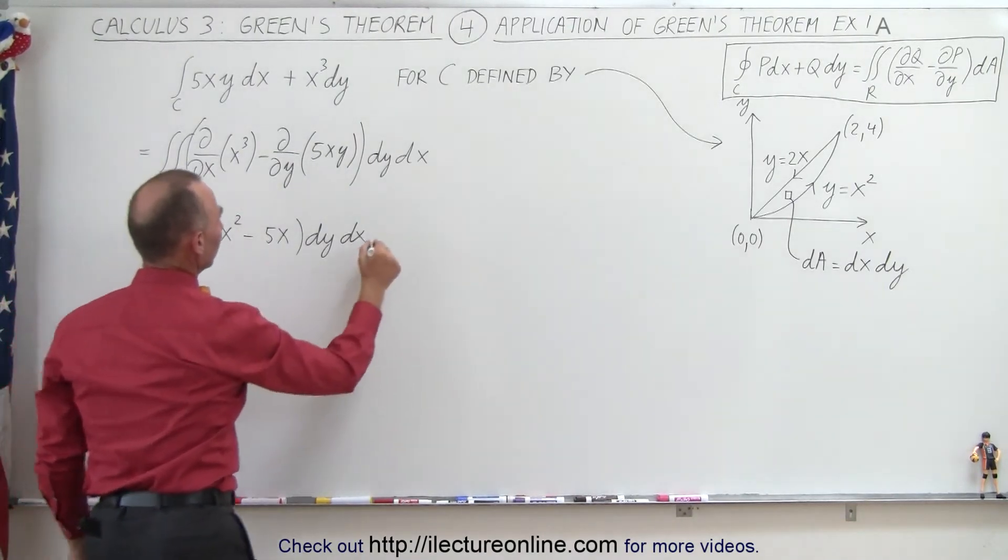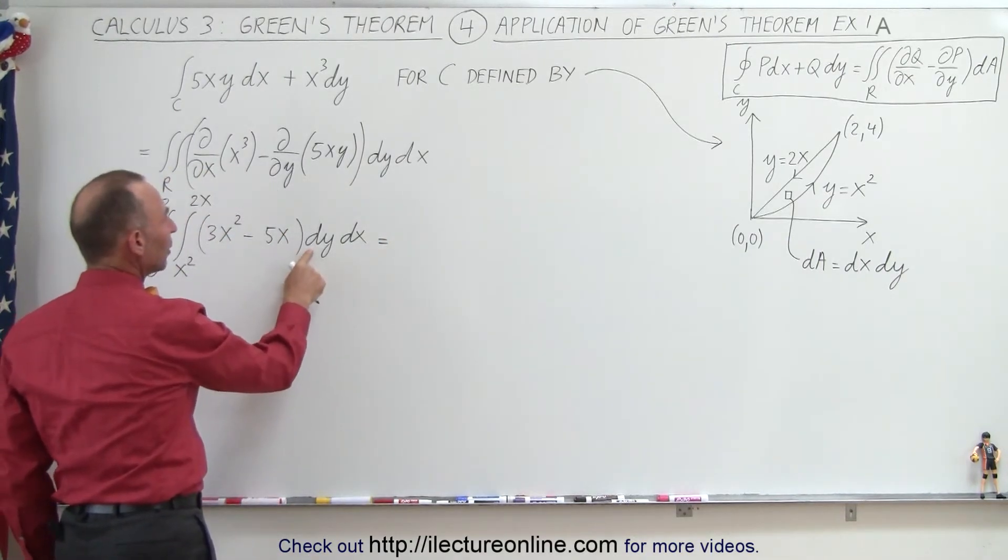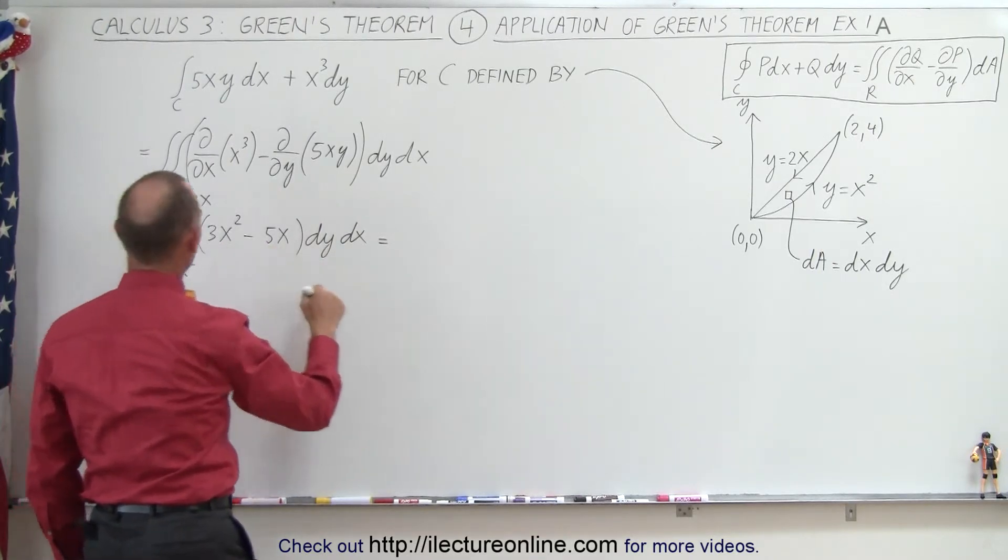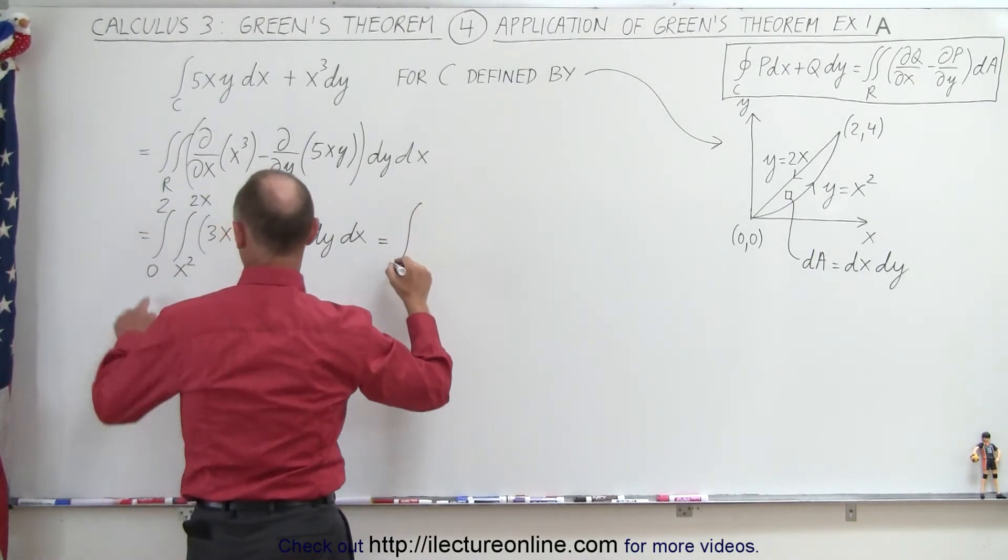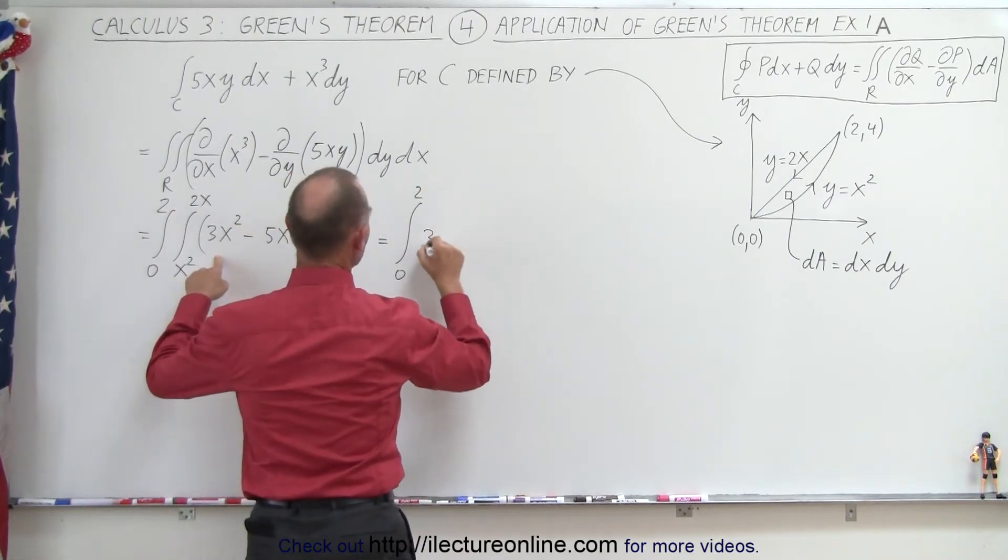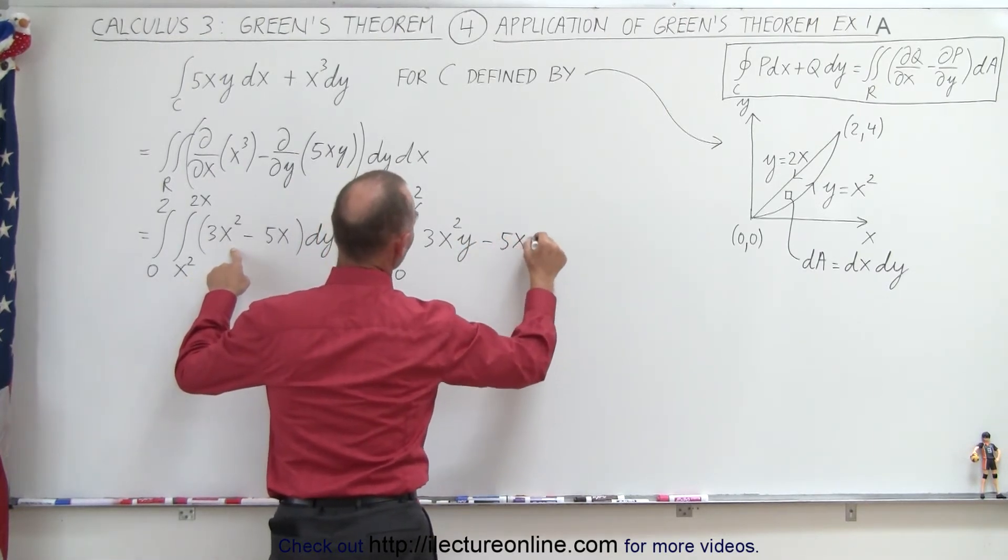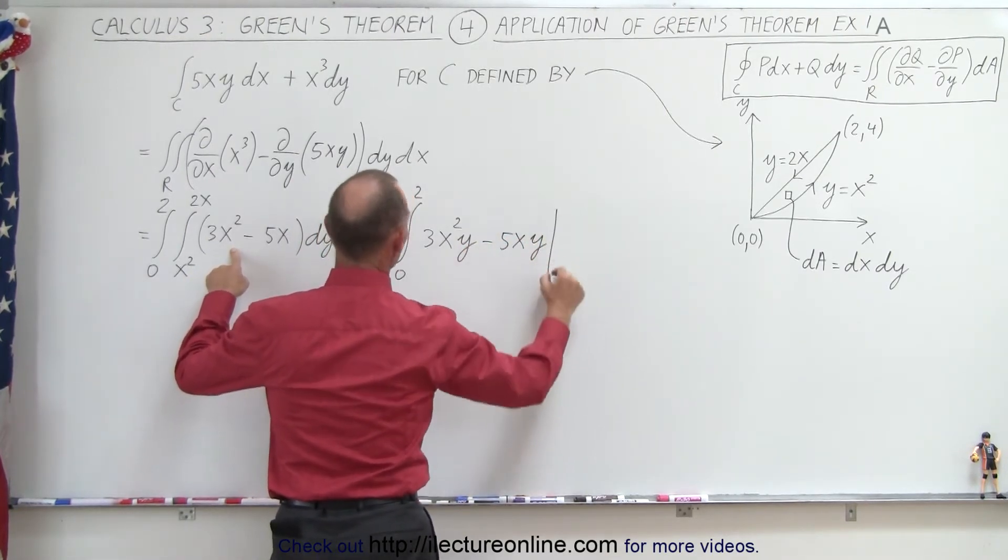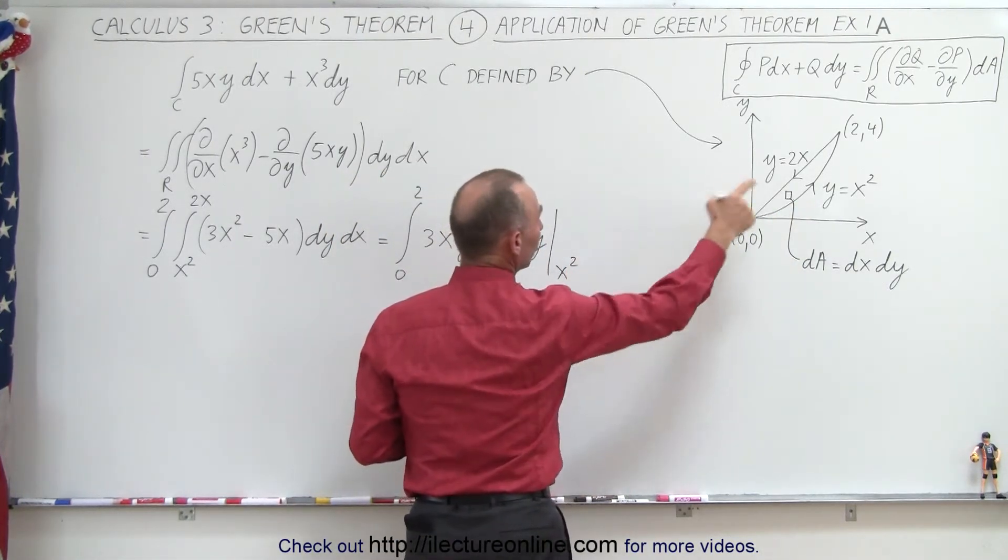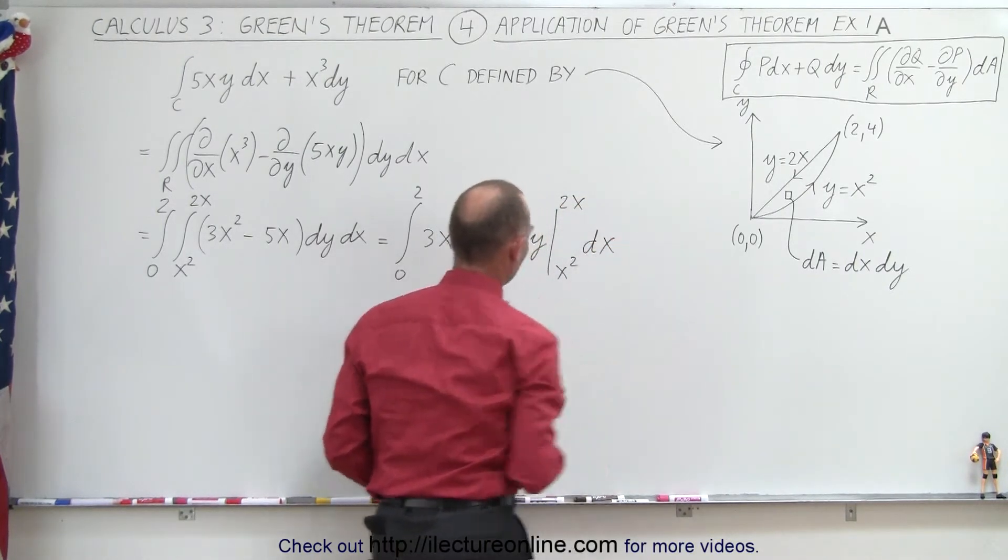All right, let's go ahead and do this integral. So when we integrate this, realizing since we're not integrating over dy or in the y direction, the x are essentially constants. So this now becomes, we still have our first integral from 0 to 2, and this now becomes 3x²y - 5xy. And the whole thing evaluated from our limits from y = x² to y = 2x, and we still have our dx for our second integral.